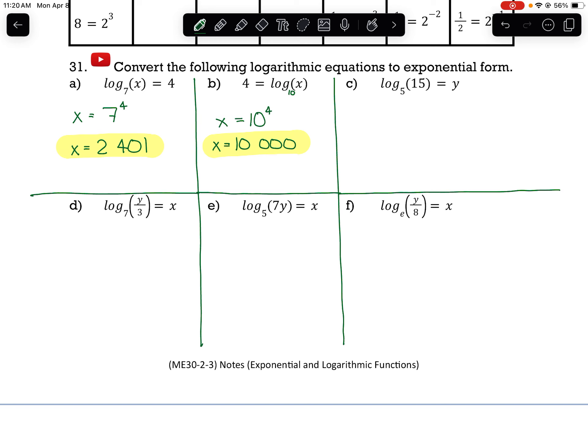Moving on to part C. Log base 5 of 15 equals y. So the base is 5, the exponent would become y, and the argument is what we're trying to get this to. So 15 equals 5 to the power of y.